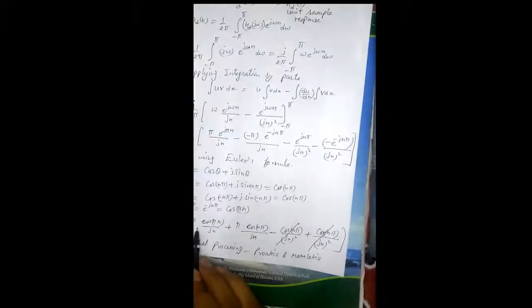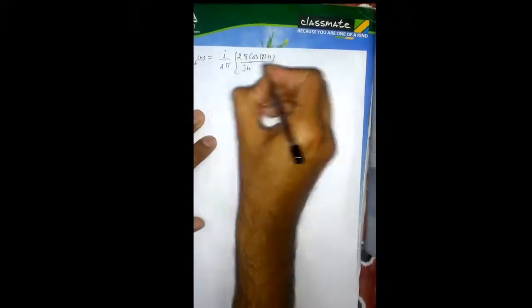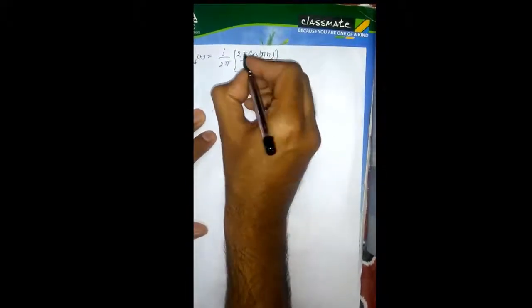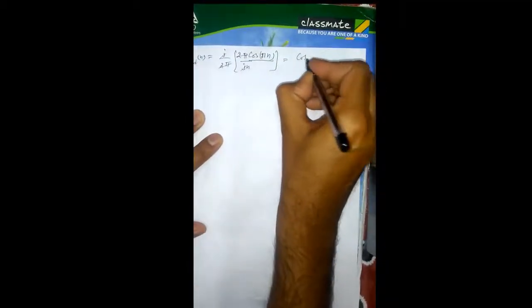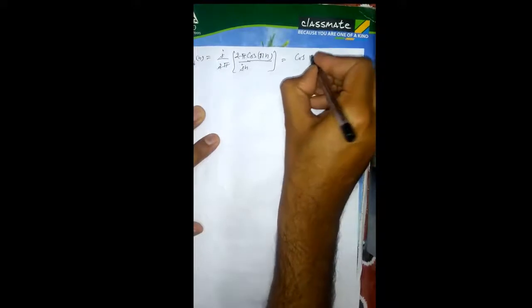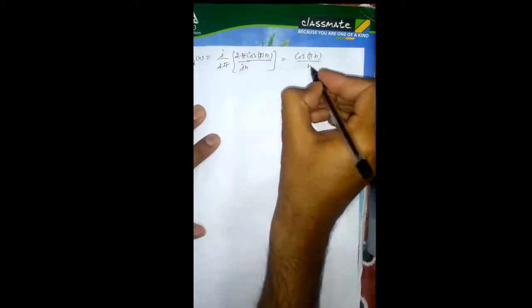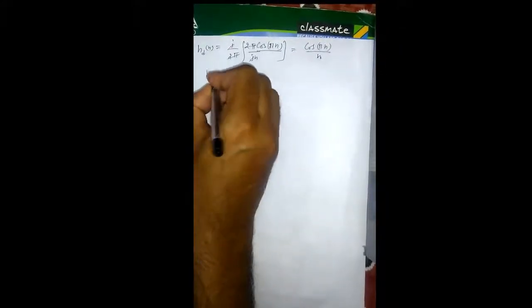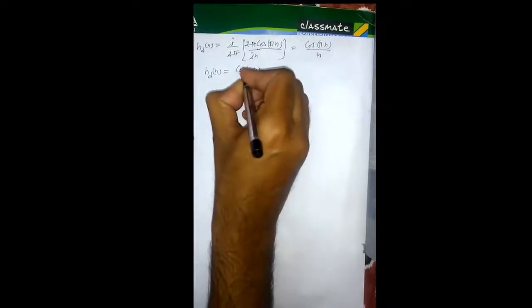So HD(n) equals j upon 2π times 2 cos(nπ) upon jn, which simplifies — the 2π cancels and j cancels — to give HD(n) equals cos(nπ) divided by n. This is our unit sample response of the FIR differentiator.